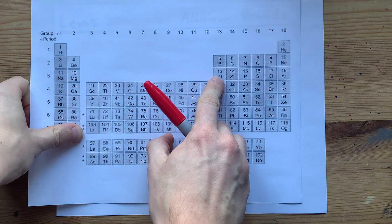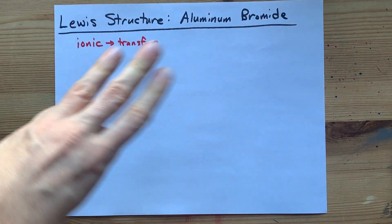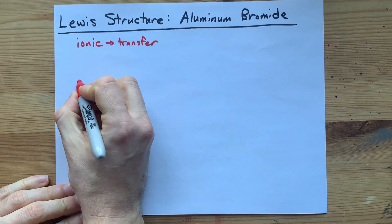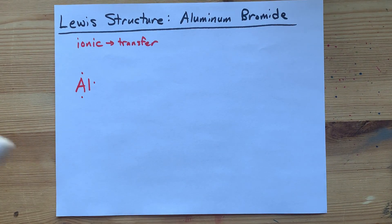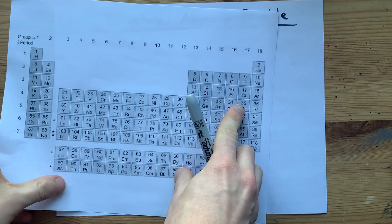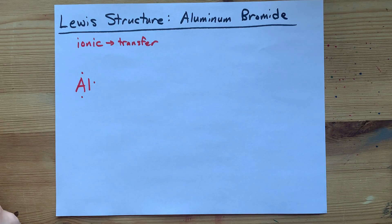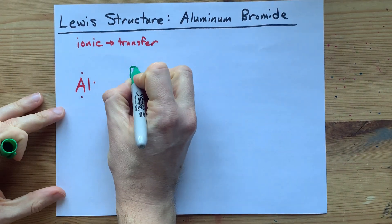Well, aluminum is in group 13, and so brings 3 valence electrons with it in a neutral atom. Bromine is in group 17, which means each bromine atom brings 7 valence electrons with it.